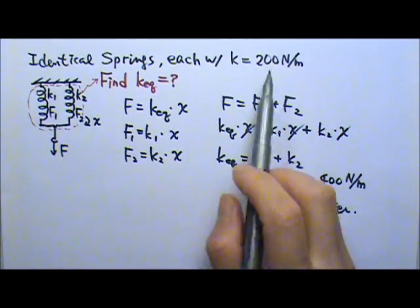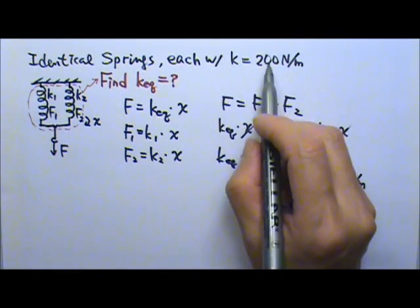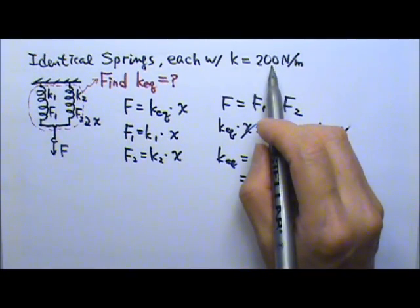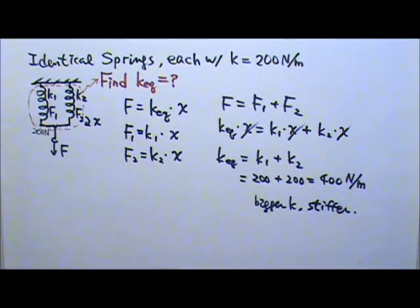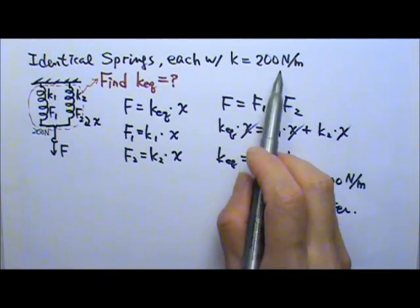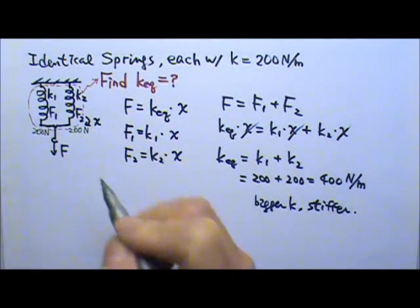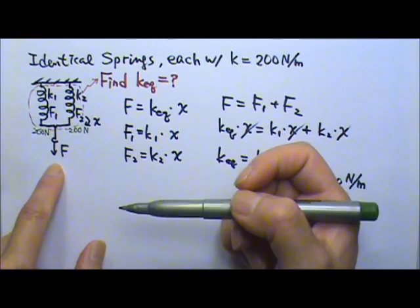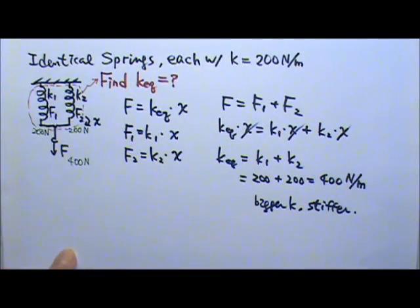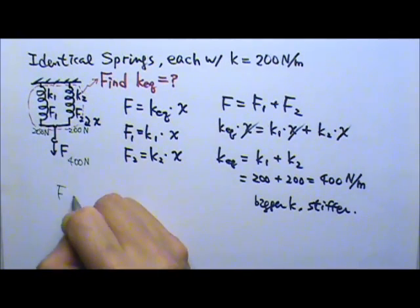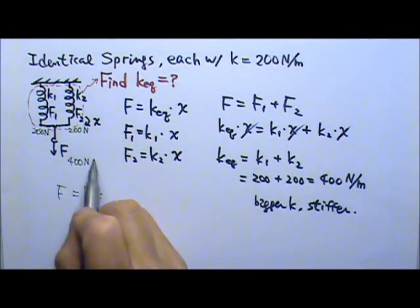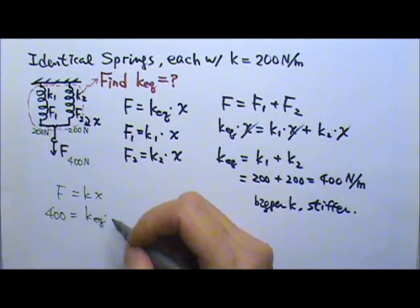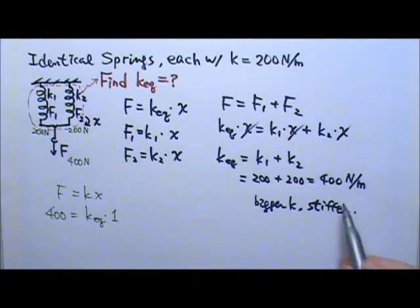Another way to solve this problem is to use the numbers directly. A spring constant of 200 N/m means if I want to stretch this spring by 1 meter, I have to pull with 200 newtons. Same for the second spring — 200 newtons. So to stretch both springs at the same time by 1 meter, I would have to pull with 400 newtons. Looking at the combination, F equals Kx: I apply 400 newtons to stretch the combination by 1 meter, so K equivalent is 400 N/m.